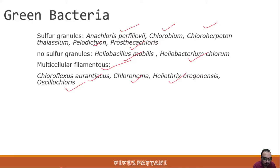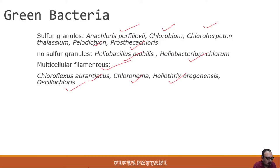Anoxygenic bacteria grow phototrophically only under anaerobic conditions and are incapable of forming oxygen. Cyanobacteria are an example that can produce oxygen through oxygenic photosynthesis, but not purple or green bacteria. Another difference involves the absorption spectrum: the pigment found in these bacteria can absorb light at long wavelengths of about 725 to 745 nanometers, in the far-red region.